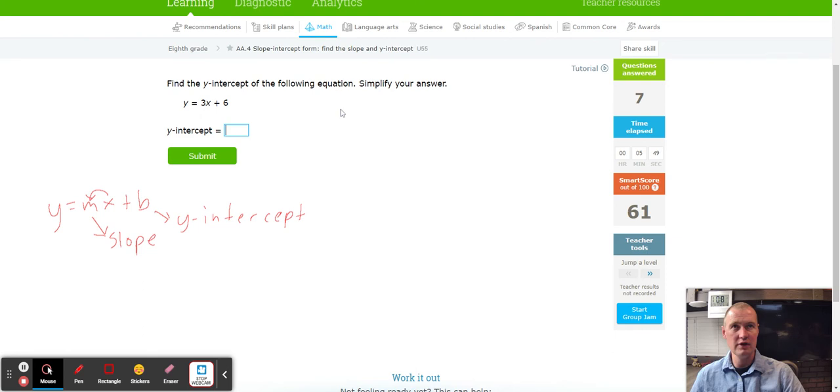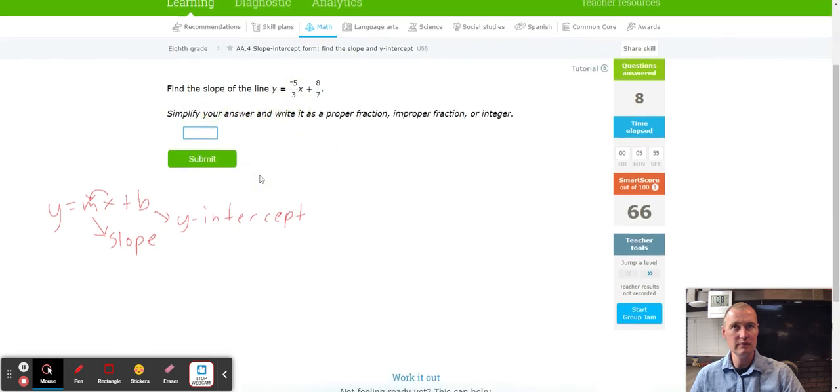Find the y-intercept of the following equation. The y-intercept is without the x, it will be six this time. Find the slope of the line, it is before the x, so we're going to include negative five over three.